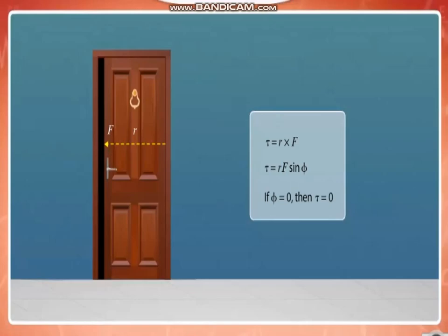If phi is zero, there is no torque. That is, if you pull the door parallel to the plane of the door, the door does not rotate.